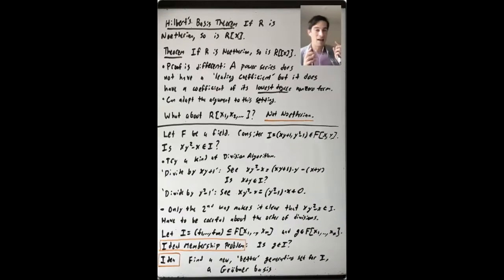okay, F is a field, F bracket X is a Euclidean domain. So it has a division algorithm. So if I give you a polynomial in one variable, and I ask, is it in an ideal in this ring? It's pretty easy to see what to do. You apply the division algorithm, and you see if your remainder is zero.